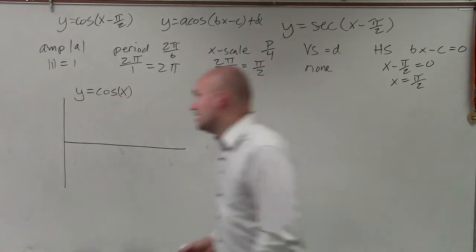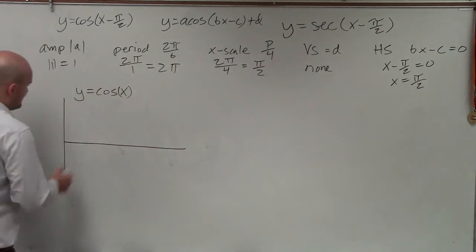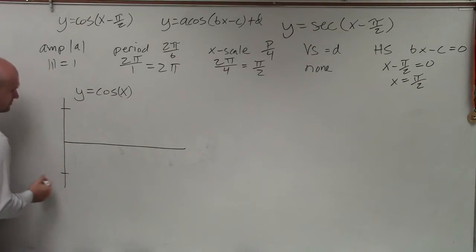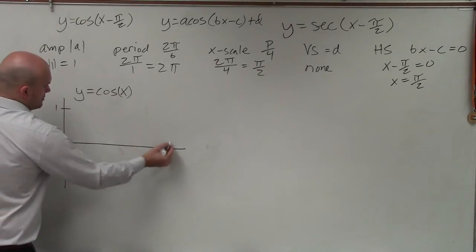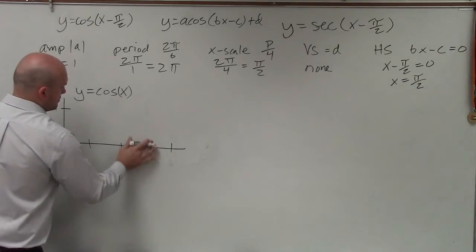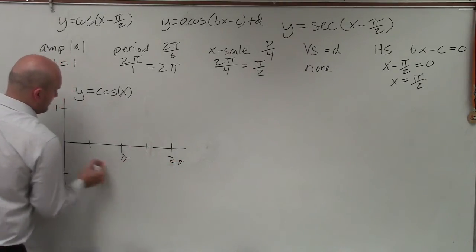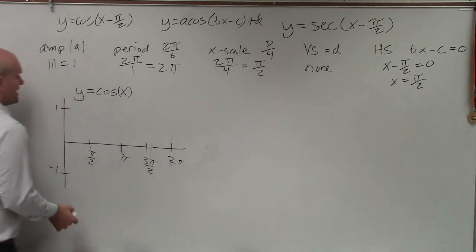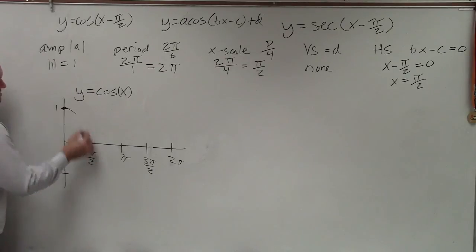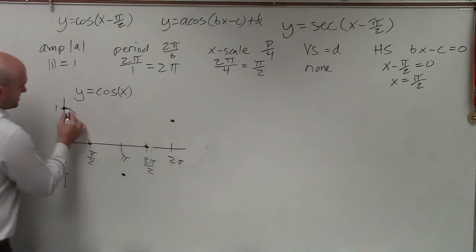So let's just graph what is cosine of the function x without the pi halves, because you have to understand the parent graphs. And I'm just going to graph the initial period. Again, this graph is going to continue indefinitely to the right and to the left. But the initial period has an amplitude of 1 and it has a period of 2 pi. So 2 pi, pi, pi halves, and this would be 3 pi over 2. And the initial period starts at its maximum, goes to its intercept, goes to its minimum, intercept, and then back up to the maximum.